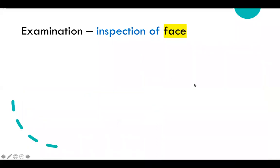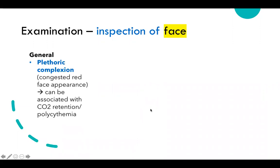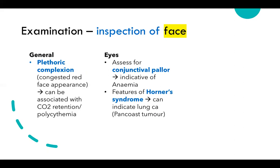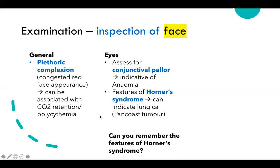When inspecting the face, look for a plethoric complexion — a congested red appearance — associated with CO2 retention or polycythaemia. Assess for conjunctival pallor by looking under the eyes, which could indicate anaemia. Also look for features of Horner syndrome — miosis, ptosis, and anhidrosis — which may indicate lung cancer, particularly a Pancoast tumour.